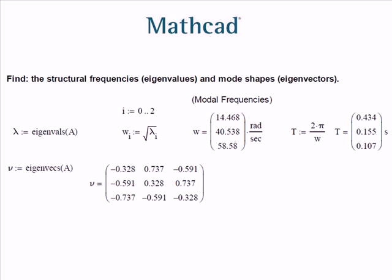With the matrix A defined, I can solve for the eigenvalues using the eigenvalues function in Mathcad. Now recall that lambda was omega n squared, so in order to solve for the frequencies I need to take the square root of lambda.